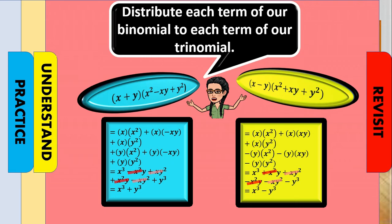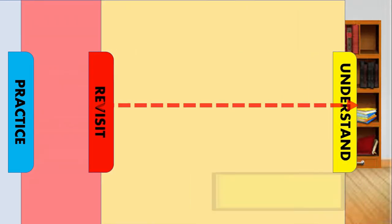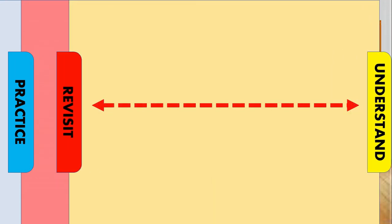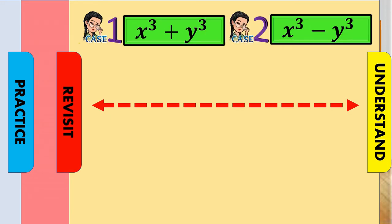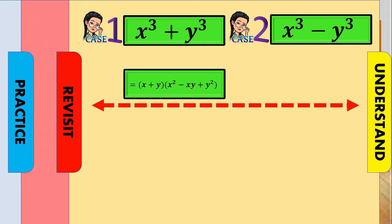Keep in mind what we have revisited. We have two cases: case one and case two. The polynomial in the form x cubed plus y cubed is called the sum of two cubes, because two cubic terms are being added together.